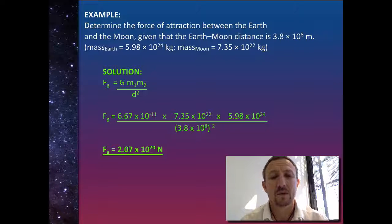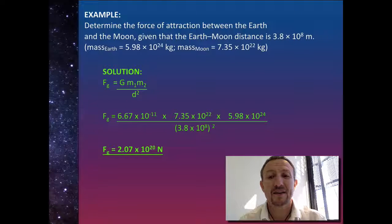So we apply our formula, Fg = G m₁ m₂ / d². So I've got my gravitational constant, 6.67 × 10⁻¹¹, and I multiply it by the two masses, 7.35 × 10²², which is the mass of the moon, times 5.98 × 10²⁴, which is the mass of the earth.